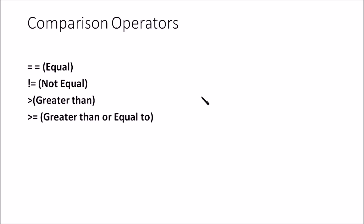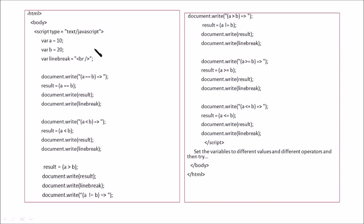Regarding comparison operators, all the standard comparison operators available in other languages are present in JavaScript. Here is an example showing a JavaScript code that demonstrates the usage of comparison operators. Inside the script tag, two variables are defined, then a line break is defined. First, it checks whether a equals b and the result is printed, followed by a line break. Then the next statement checks whether a is less than b and shows the result.